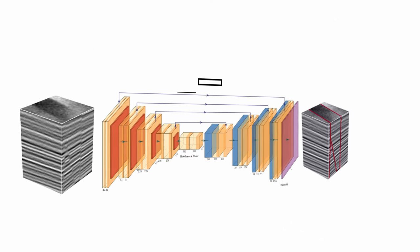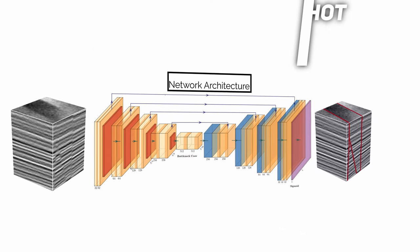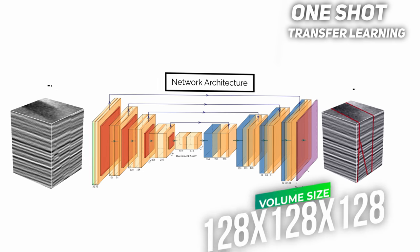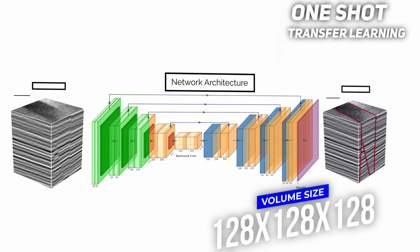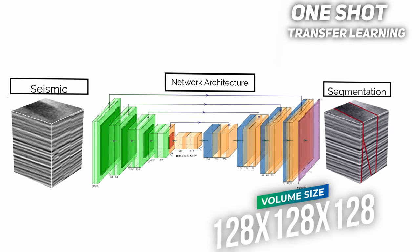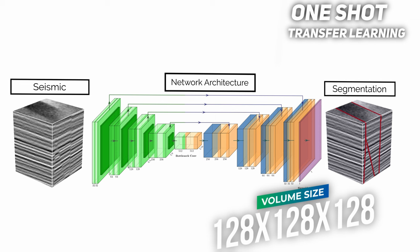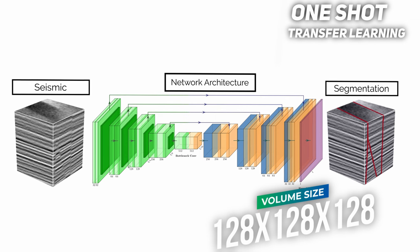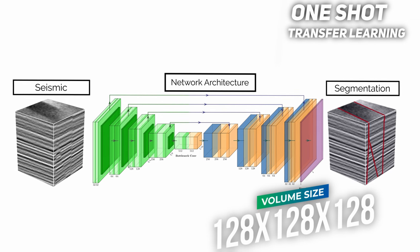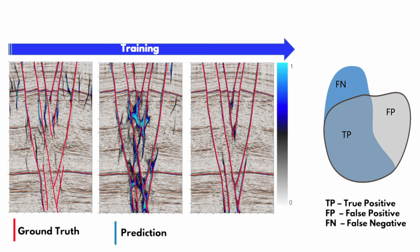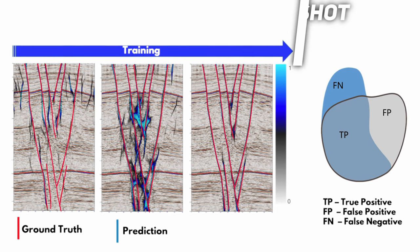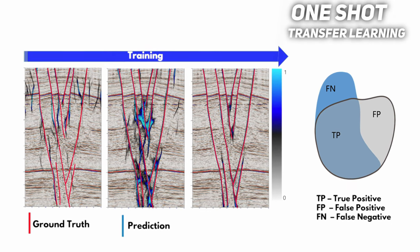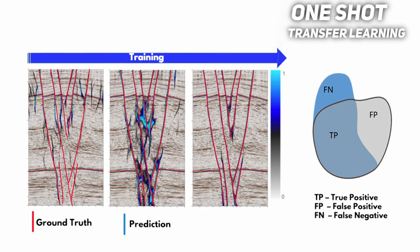Once we have a dataset for training, we train the UNET network. The network accepts raw seismic data with dimensions of 128 in each direction and outputs fault segmentation with the same dimensions. At each stage, we must use metrics to control the performance of the neural network on synthetic or real datasets.